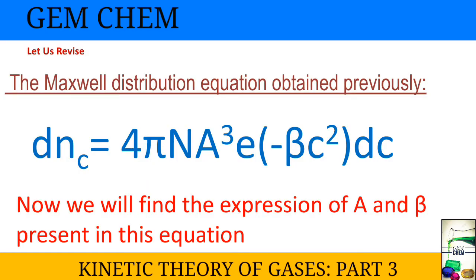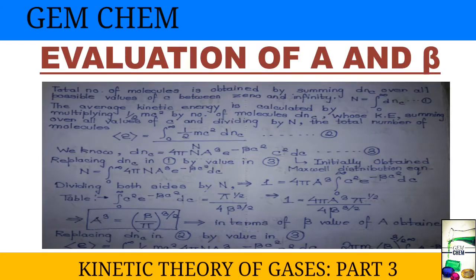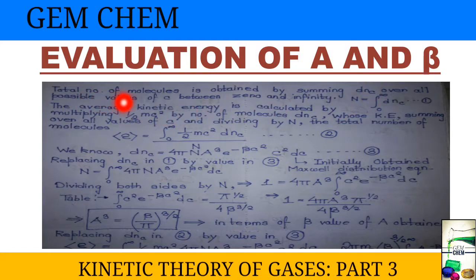We have already obtained the expression for Maxwell distribution, and now we will find the value of A and beta present in it. We know that the total number of molecules is obtained by summing dNc, as seen in the previous discussion. I will give the link in the description box for the derivation of the Maxwell distribution equation. We integrate dNc over all possible values of c between 0 and infinity to get the total number of molecules in the container.